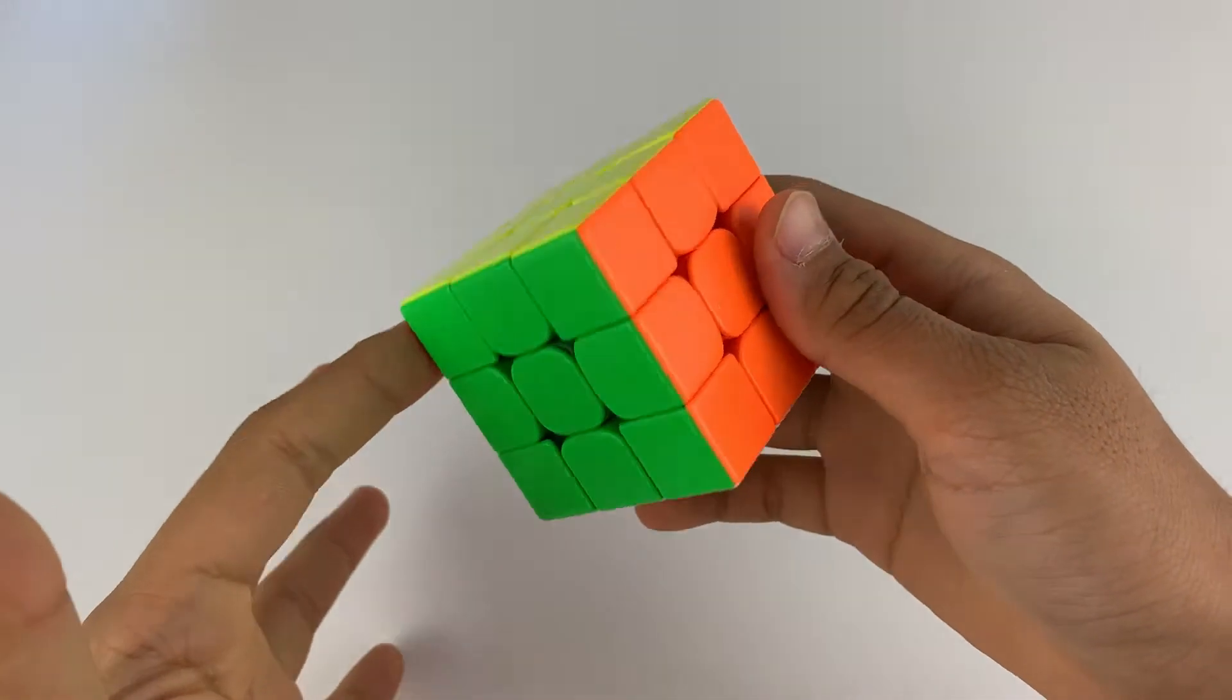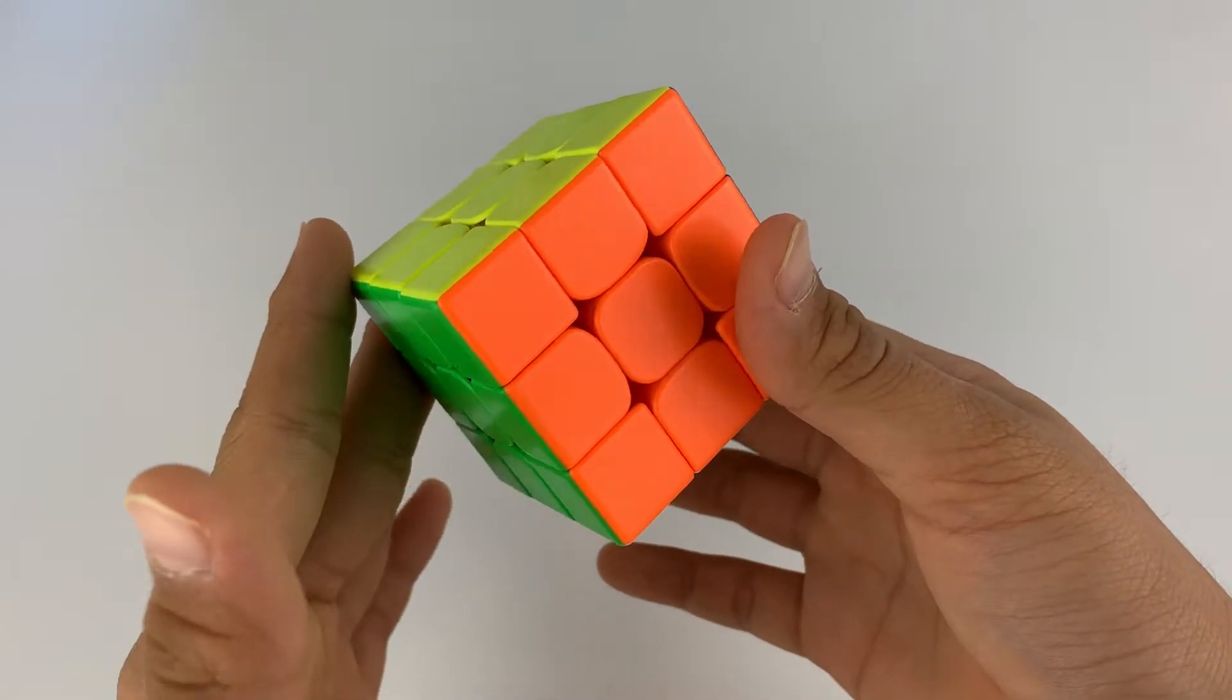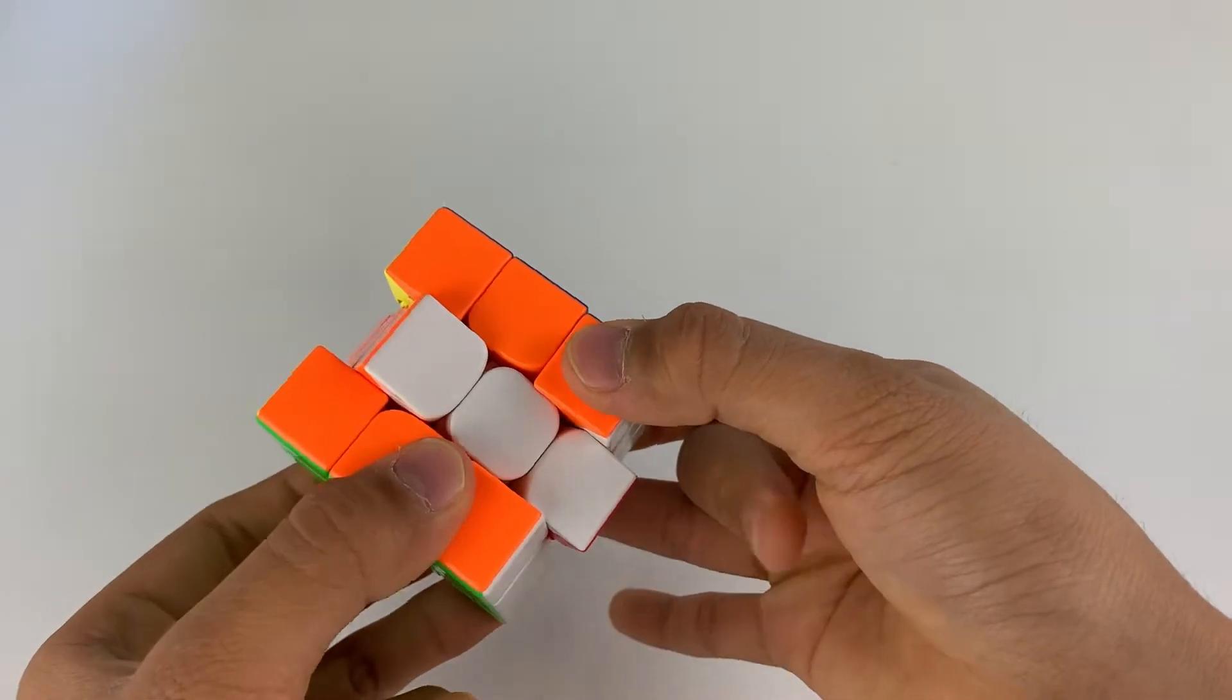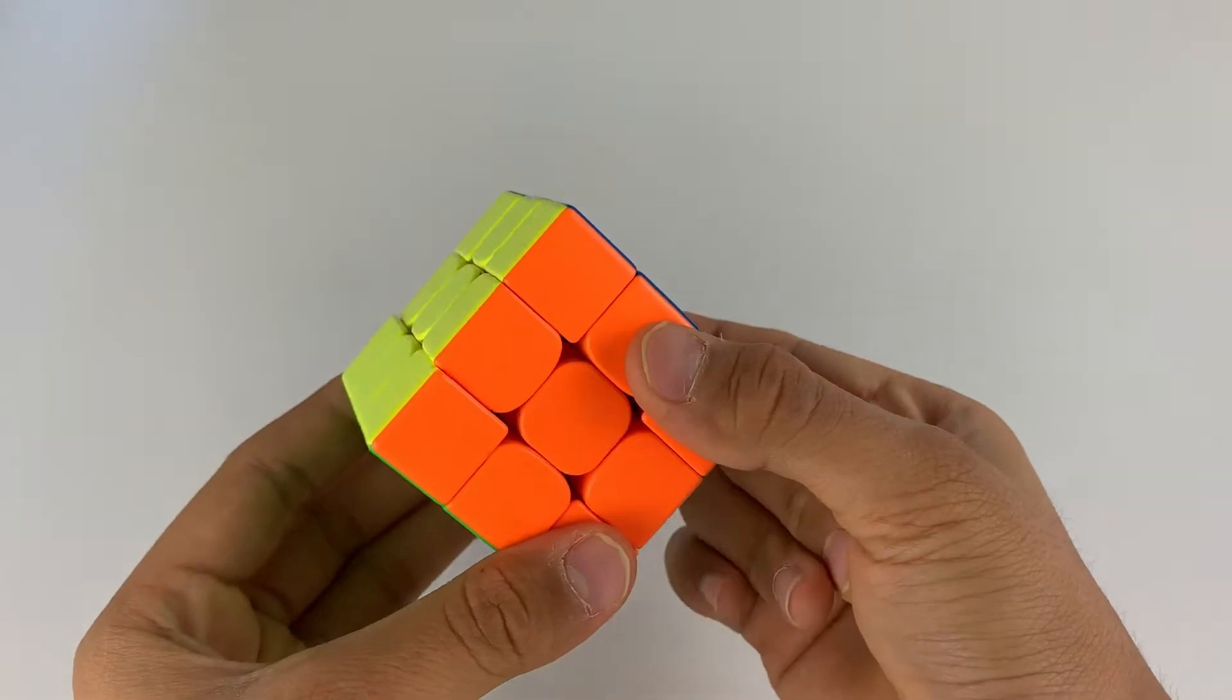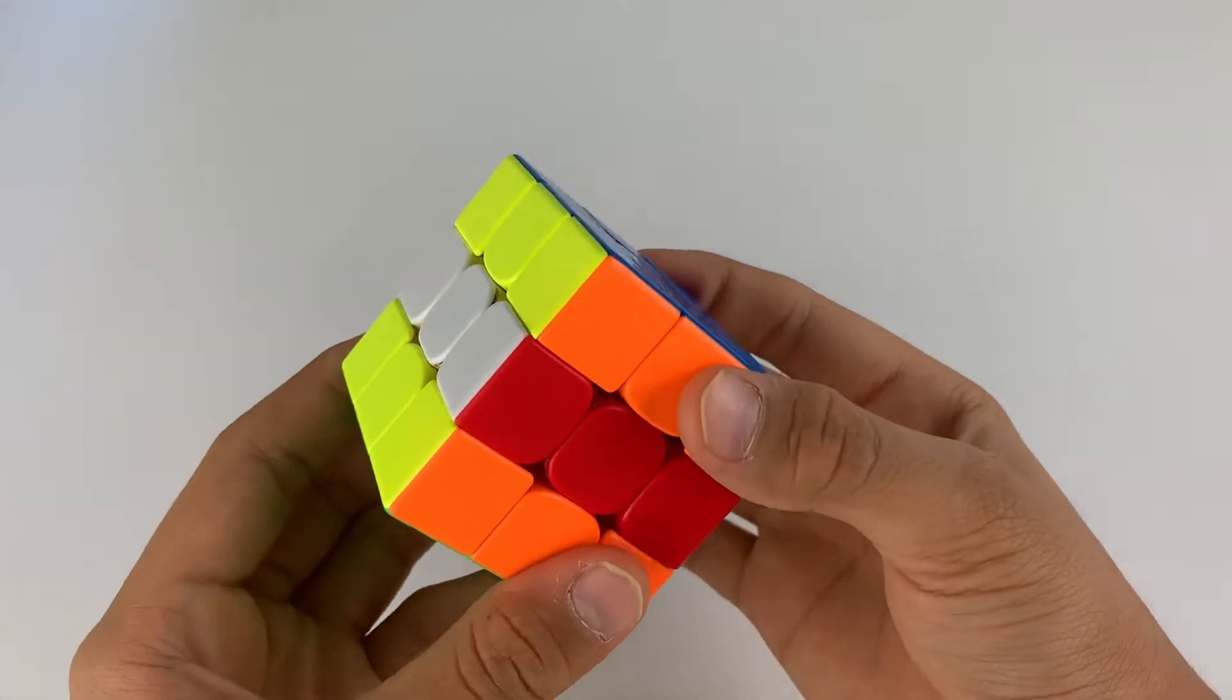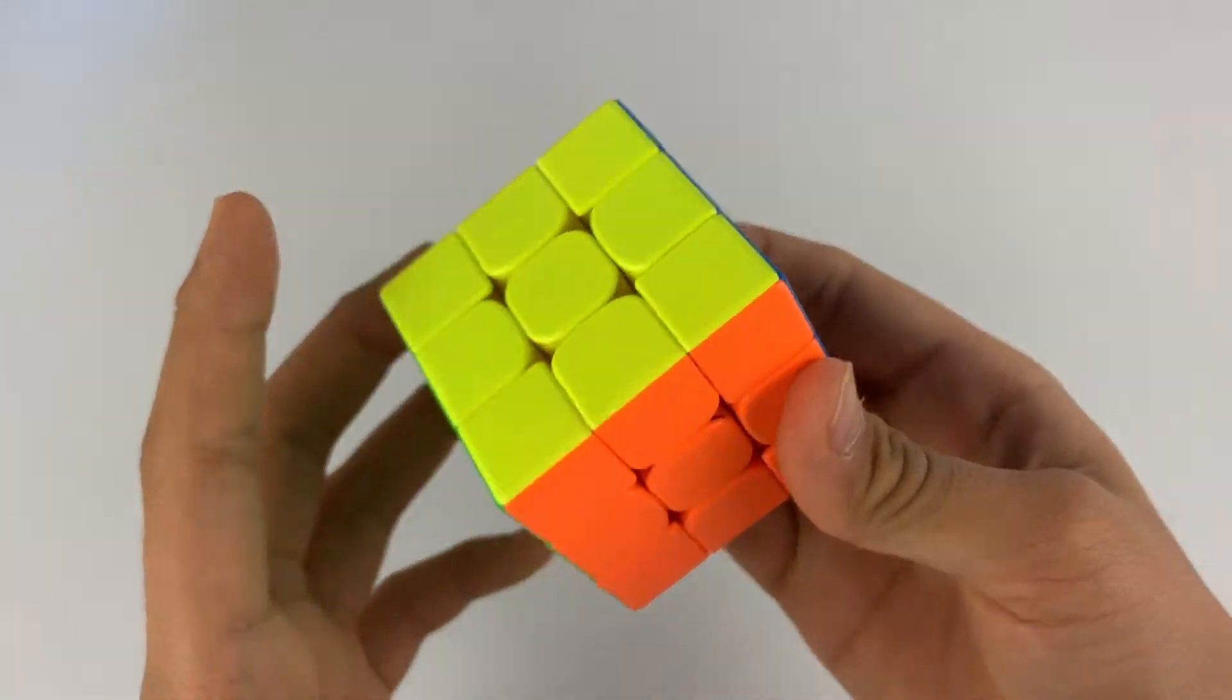So there are two ways to do M2 flicks and here's the one that I use. You do an M move with your middle finger followed by an M move with your ring finger. It'll feel really unnatural at first, but it will make your algorithms much faster.